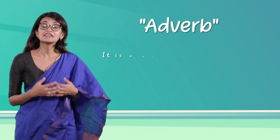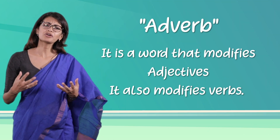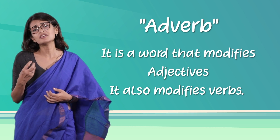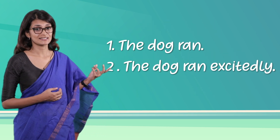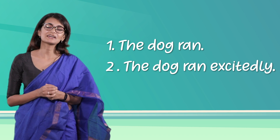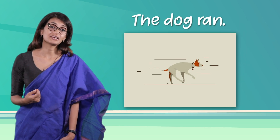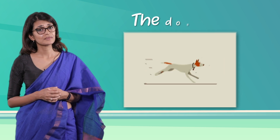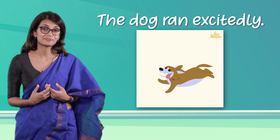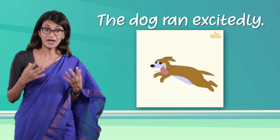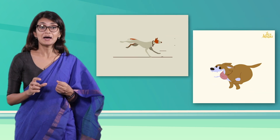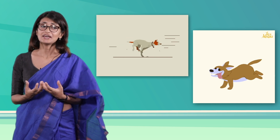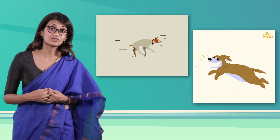An adverb is a word that modifies a verb, an adjective or a word group. Adverbs can always be used to modify verbs. Notice that the second of these two sentences is much more interesting simply because it contains an adverb. 'The dog ran.' You can picture a dog running but you don't really know much more about the scene. 'The dog ran excitedly.' You can picture a dog running, wagging its tail, panting happily and looking glad to see its owner.